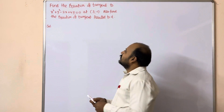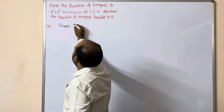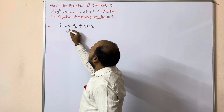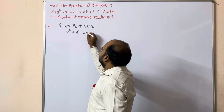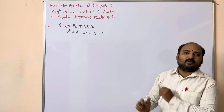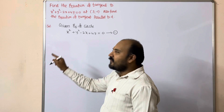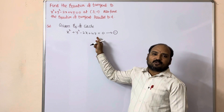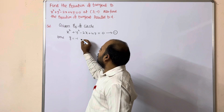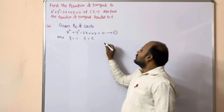First, find out the tangent equation. The given equation of the circle is x² + y² - 2x + 4y = 0. Compare this with the general equation x² + y² + 2gx + 2fy + c = 0. So 2g = -2, giving g = -1; 2f = 4, giving f = 2; and c = 0 since the c value is not present.